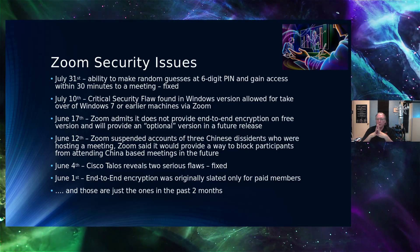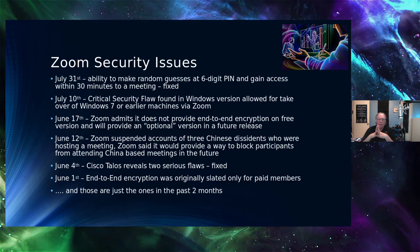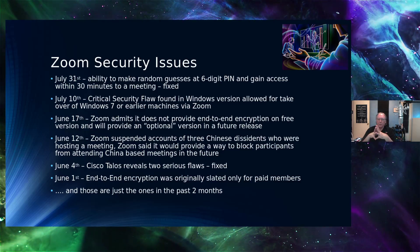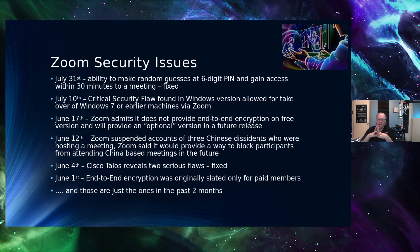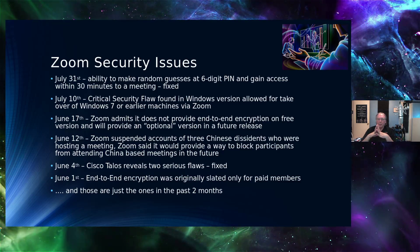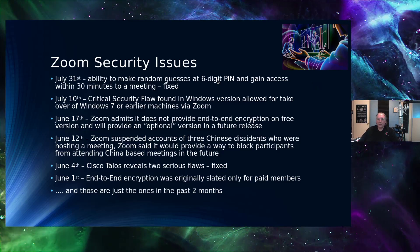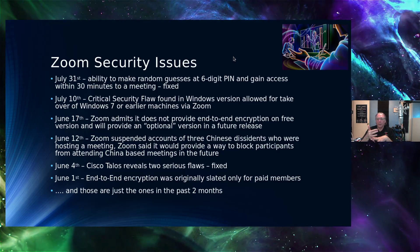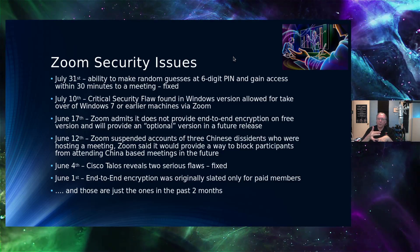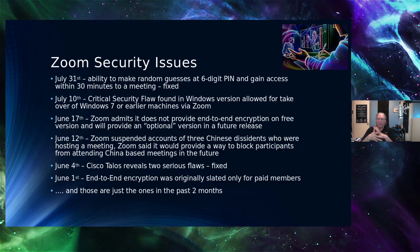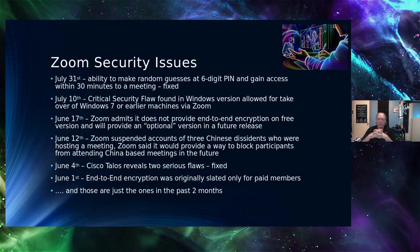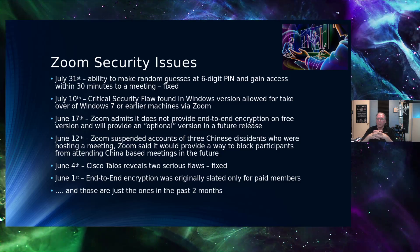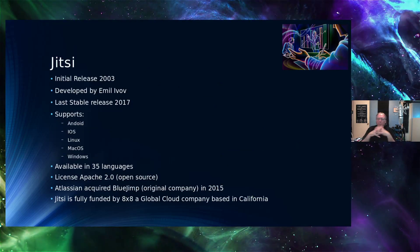On June 4th, Cisco Talos revealed two other serious security flaws — those have been fixed. On June 1st, end-to-end encryption was slated only for paid members, then Zoom said they would offer it for free users, and then on June 17th admitted it wasn't there. Beyond that, there have been issues with account information showing up on unauthorized websites, and user data being sold to Facebook. There's been a plethora of violations — whether it's the software or just the company trying to monetize it.